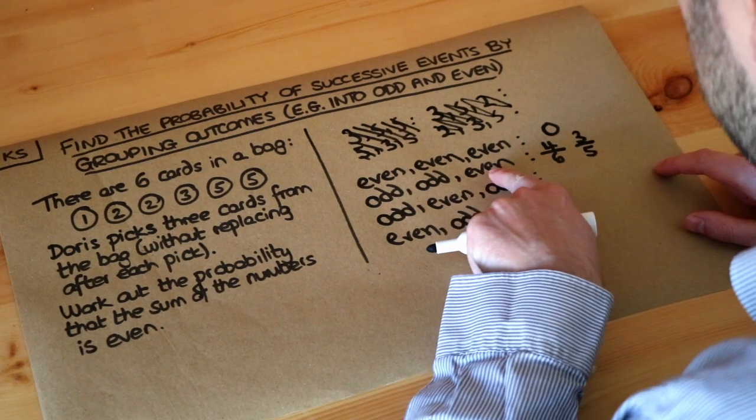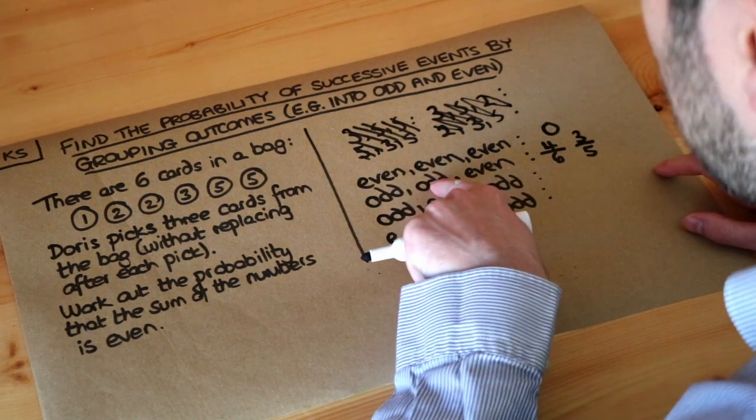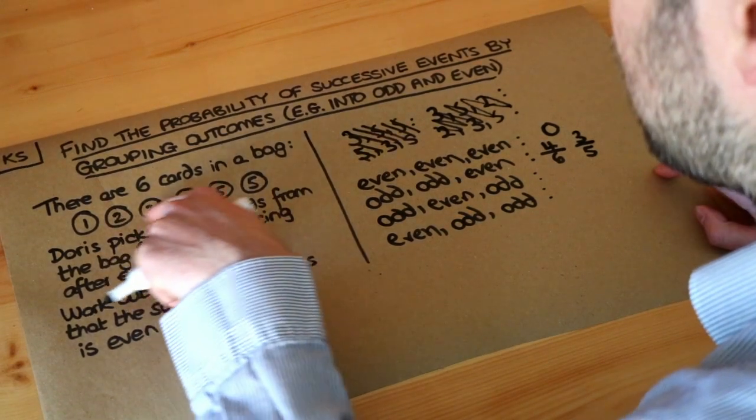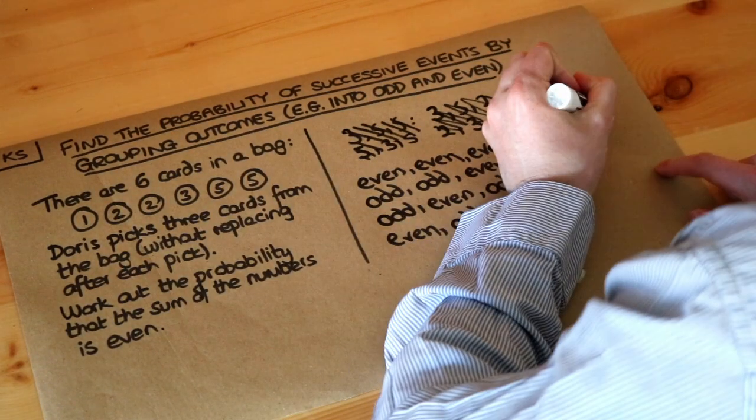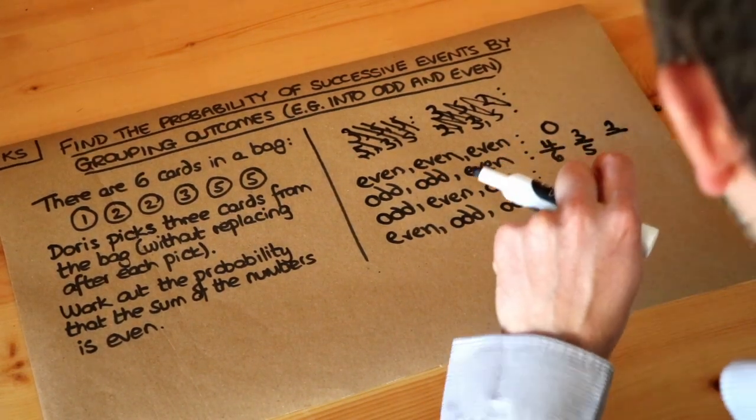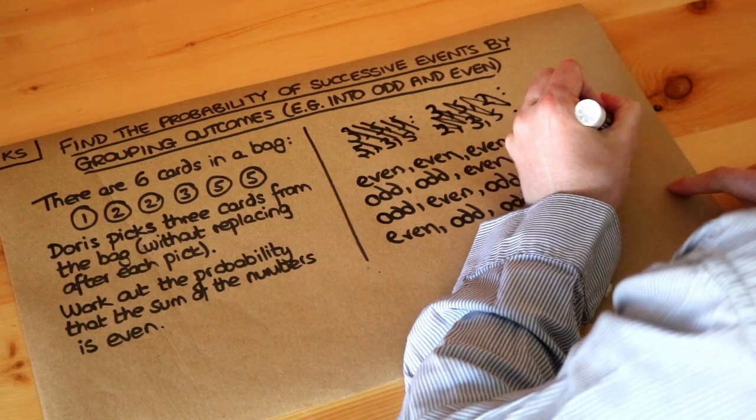Then finally, what's the probability of the last card as even? Well, we've just picked two odd cards, so like, say, the five and the five, so we've still got those two even cards left, so the probability of the last one as even is two out of. But again, the denominator goes down by one because we've got one less thing to pick from if we're not putting it back.